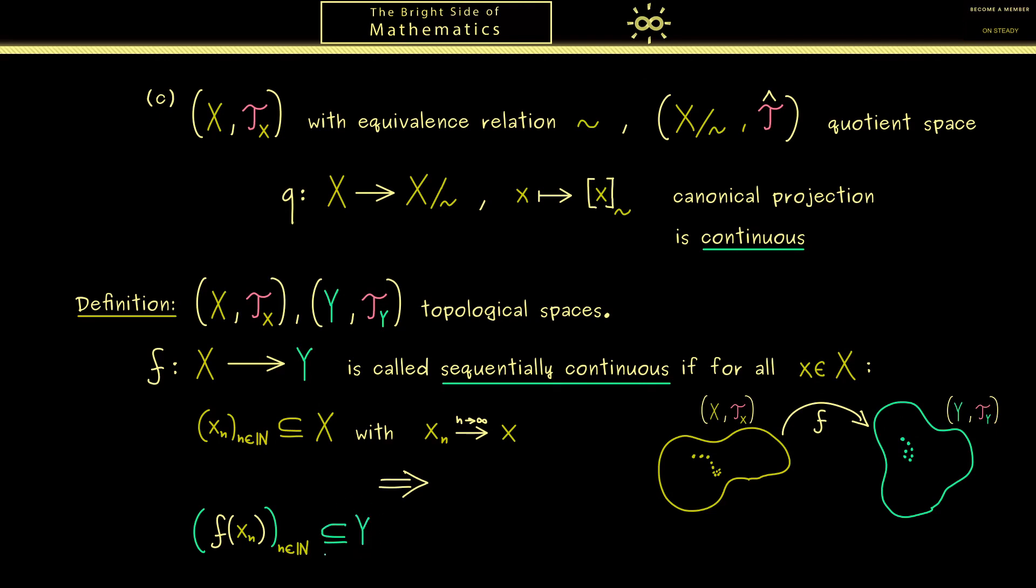So we know this should be the sequence of the images f(x_n), and they live in the set Y. So it should be convergent and the limit of f(x_n) should be the point f(x), so the image of the original point x. So this is sequentially continuous, formulating a continuity property by using sequences.